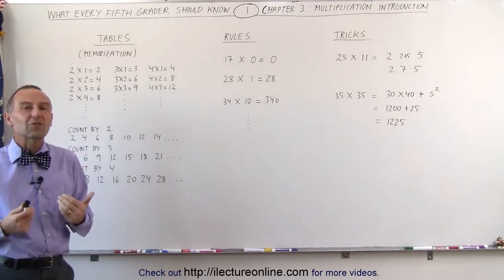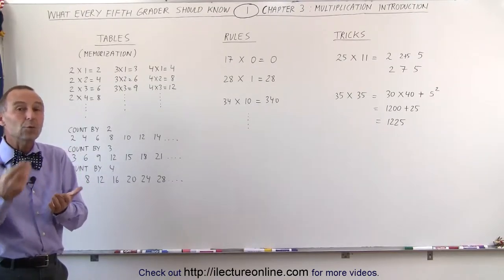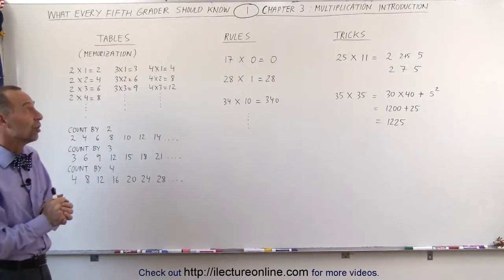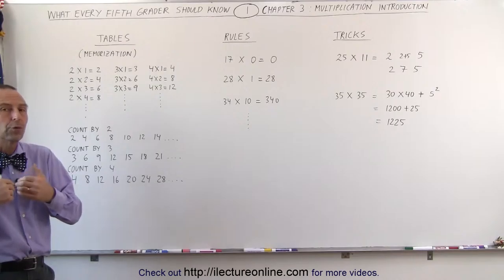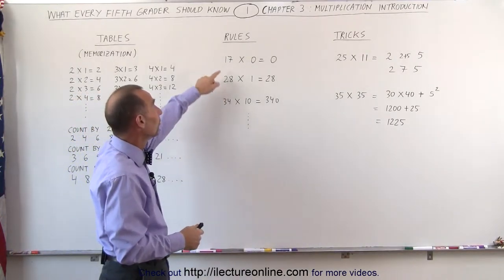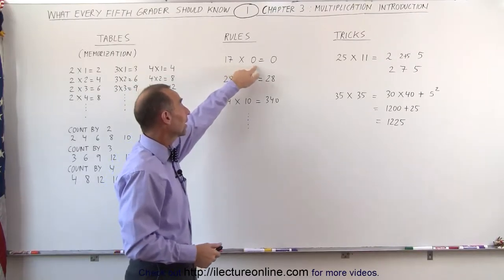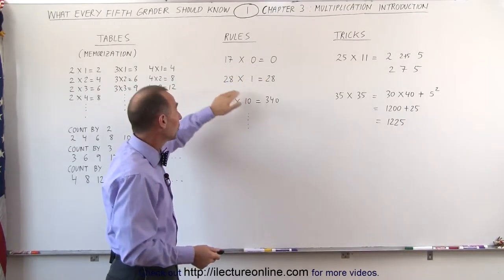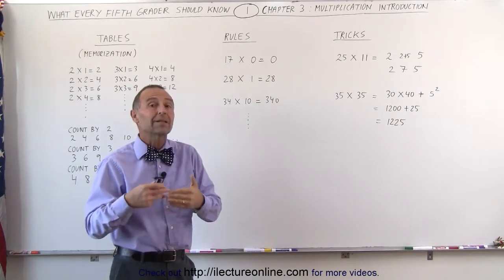Besides just rote memorization of multiplying any one-digit number with any other one-digit number, we should also learn the rules of multiplication. There's all kinds of special rules. For example, the rule of multiplying times 0. Any number multiplied times 0, you always get 0. Multiplying times 1, any number multiplied times 1, you simply get the number back.